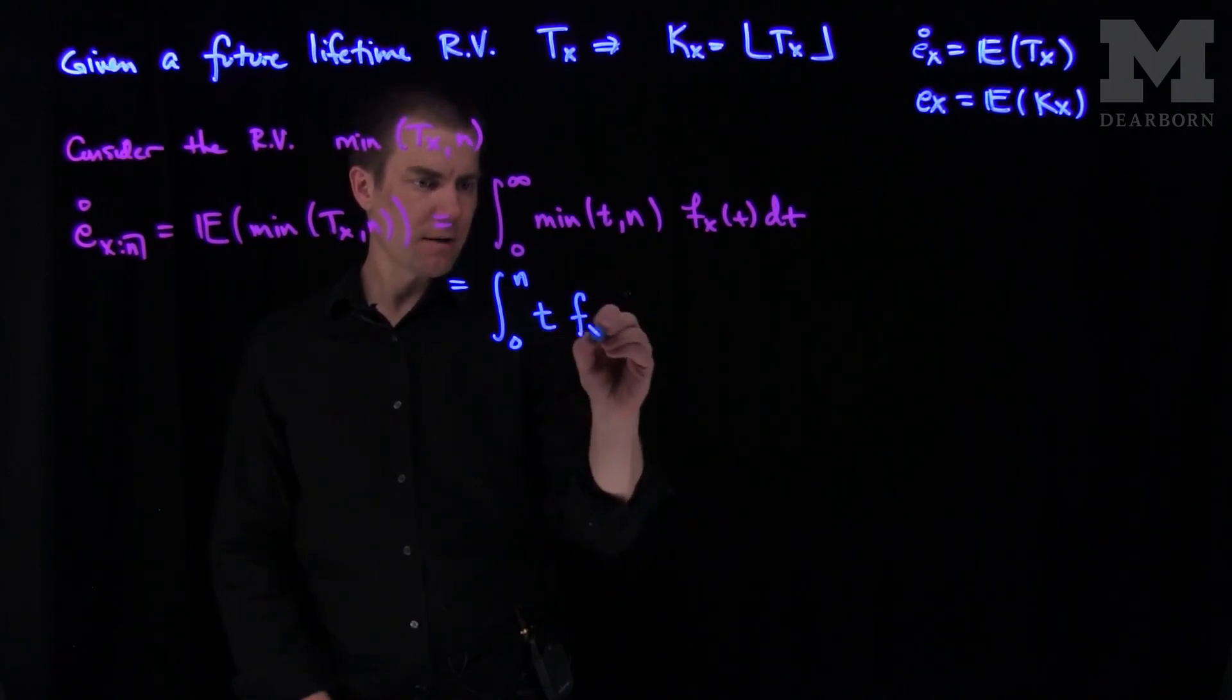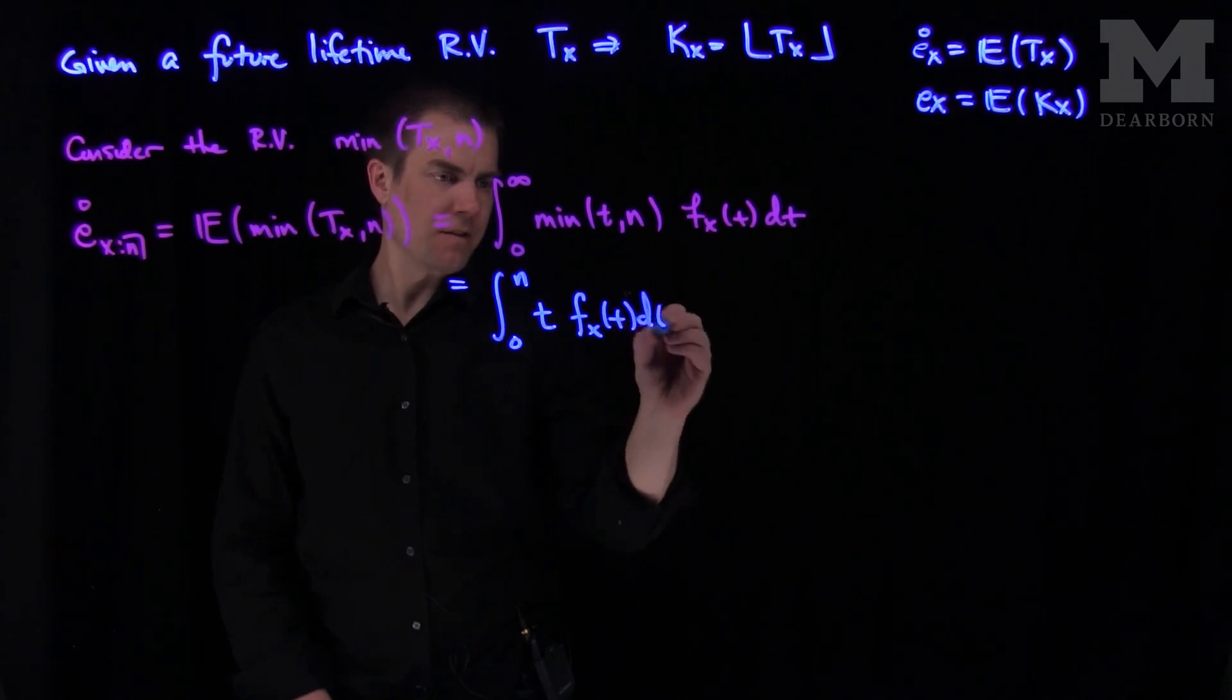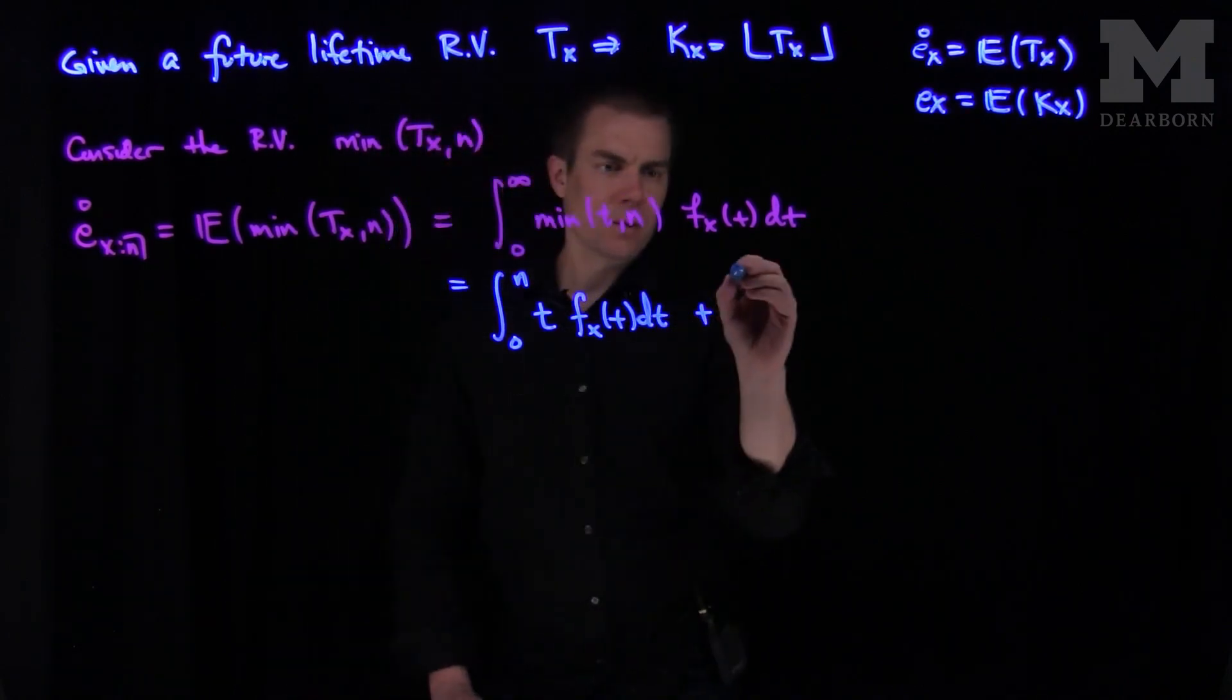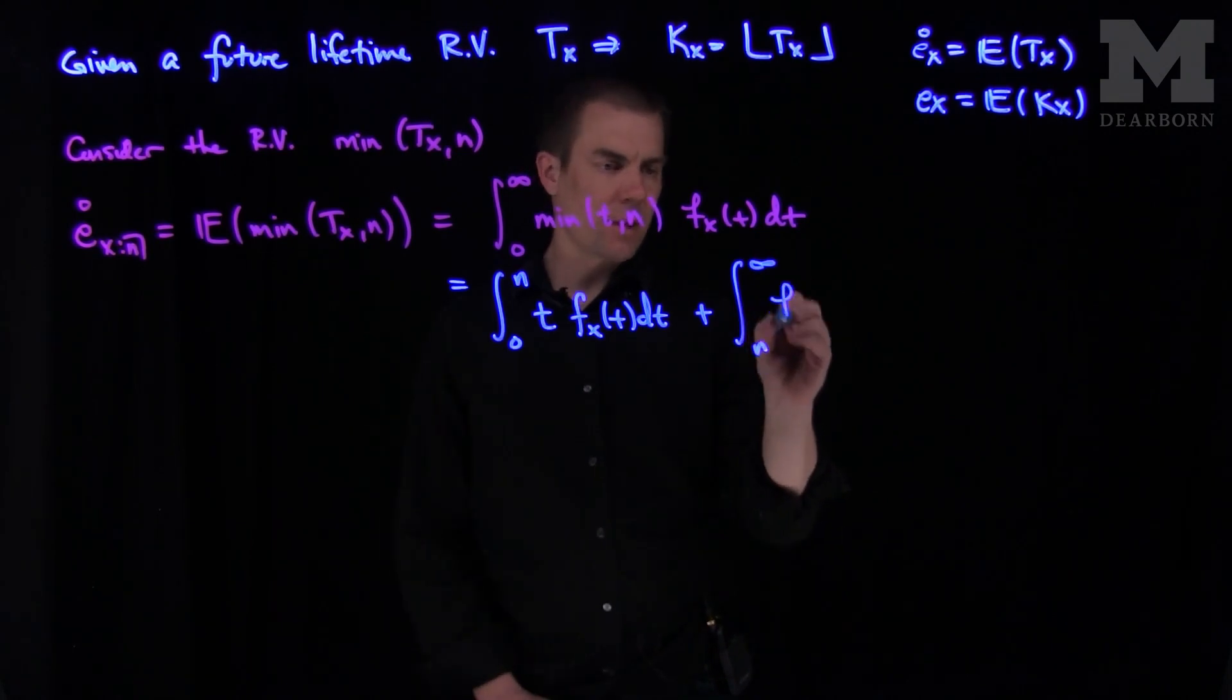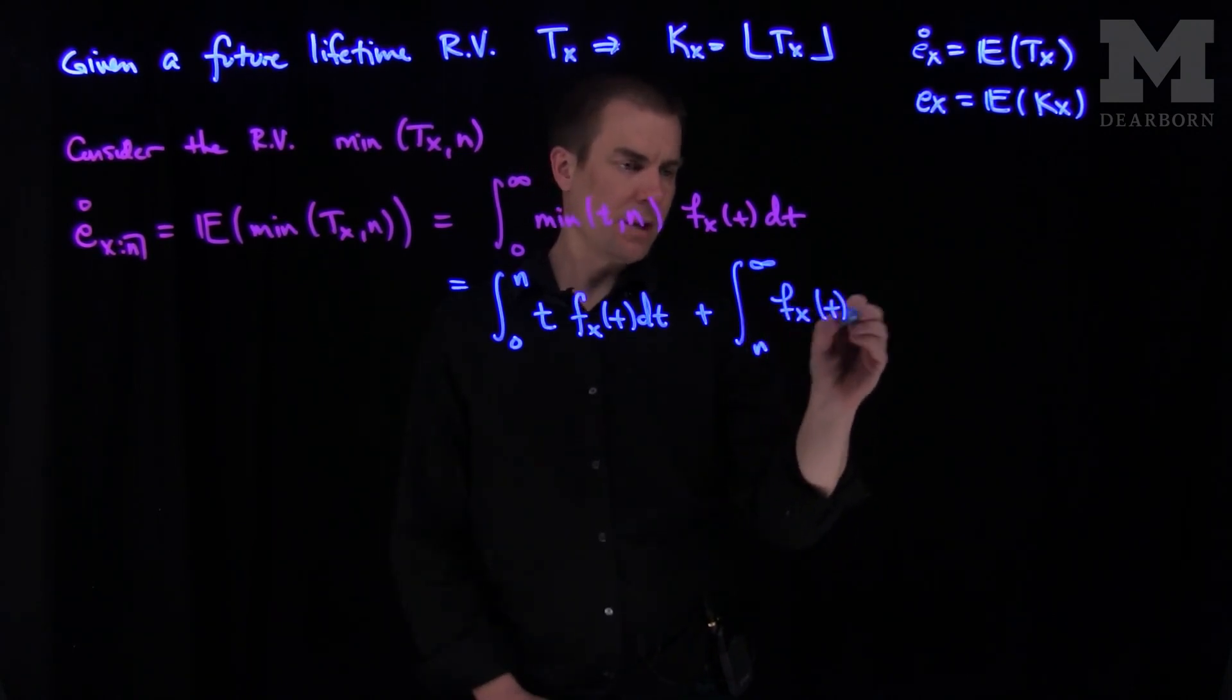So I'll have t fx(t) dt, plus the integral from n to infinity of just the pdf. So that's going to be fx(t) dt.